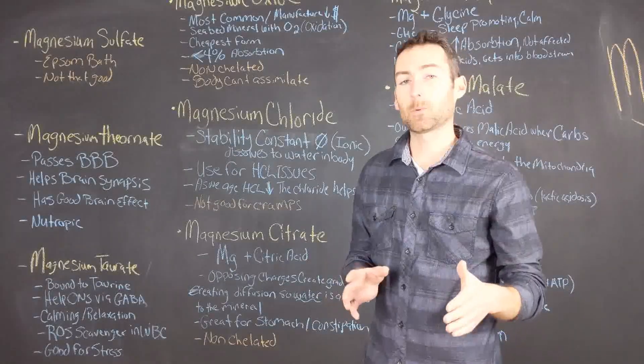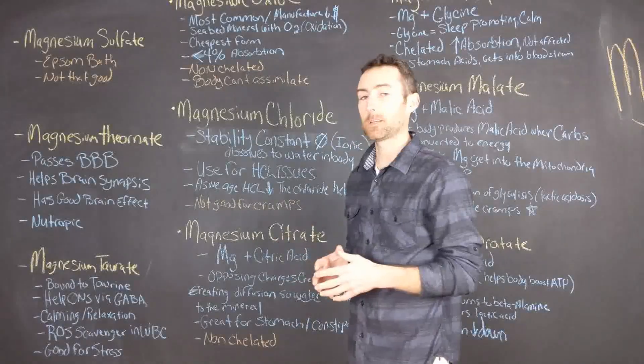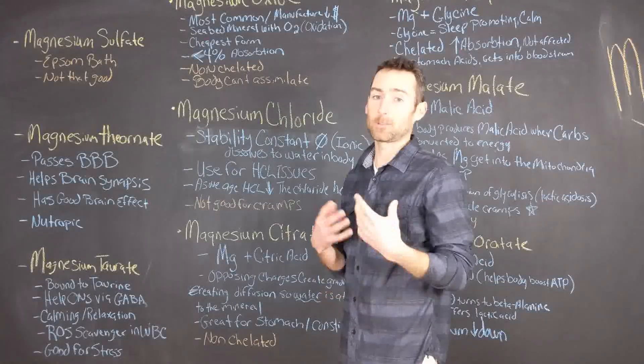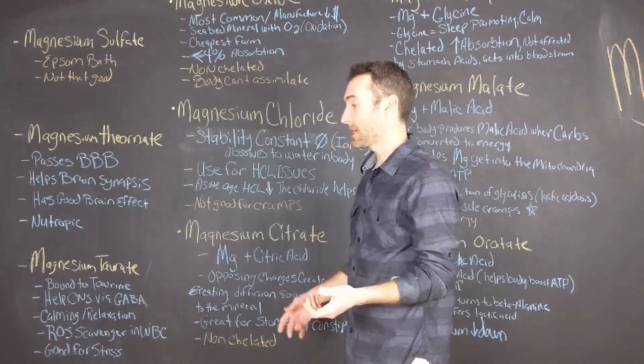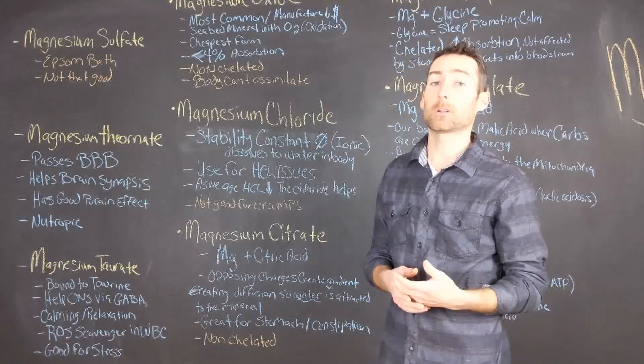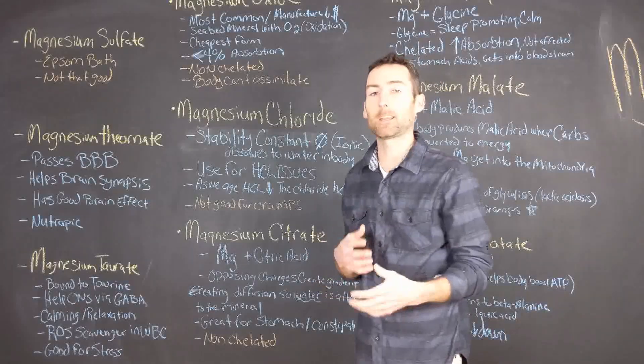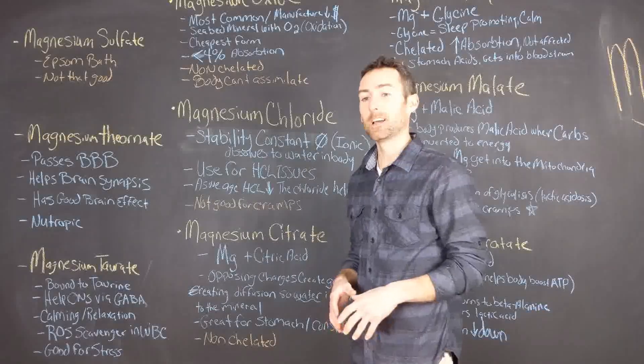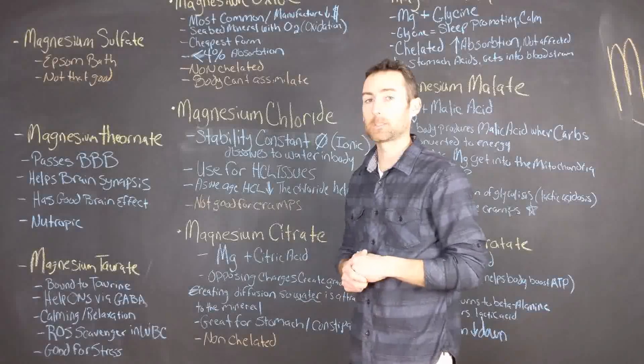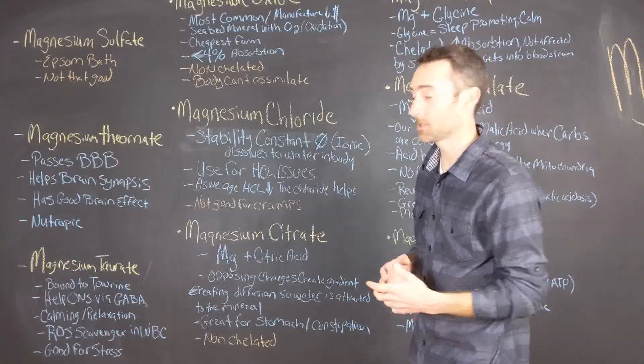A gradient is the space between the positive and negative charge. What magnesium citrate does really well is it draws water to the location where it is in the body. It's usually used as a diuretic for constipation. You're going to find magnesium citrate in a lot of these over-the-counter diuretic medications or supplements to pass a stool if you're constipated.